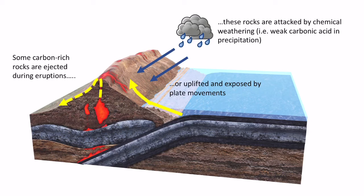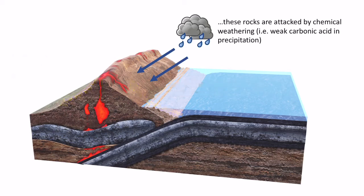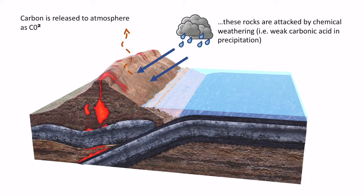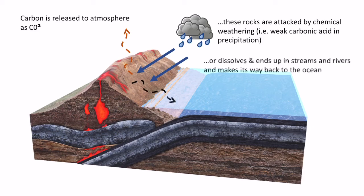That again releases more carbon. So in that process of chemical weathering attacking those sedimentary rocks, some of that carbon is released as carbon dioxide back into the atmosphere. But in the process of breaking down those rocks in situ, some of the carbon dissolves, ends up in streams, and eventually, over a long period of time, some of that carbon will make its way back into the ocean.